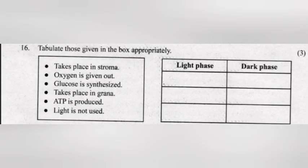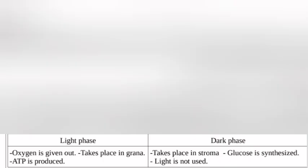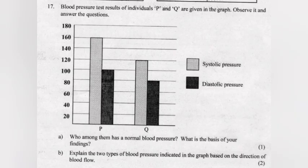Question 16: Tabulate those given in the box appropriately. Answer — Light phase: oxygen is given out; takes place in Grana; ATP is produced. Dark phase: takes place in Stroma; glucose is synthesized; light is not used.